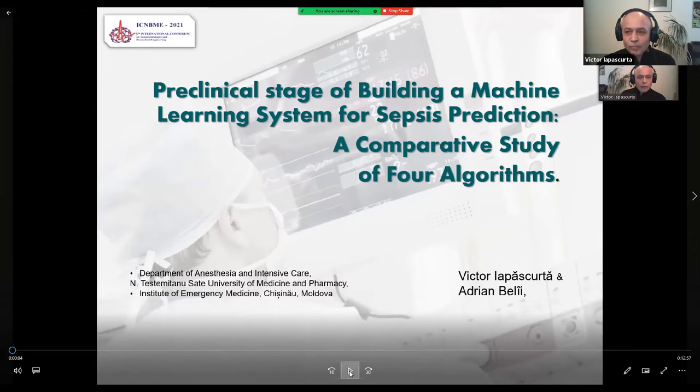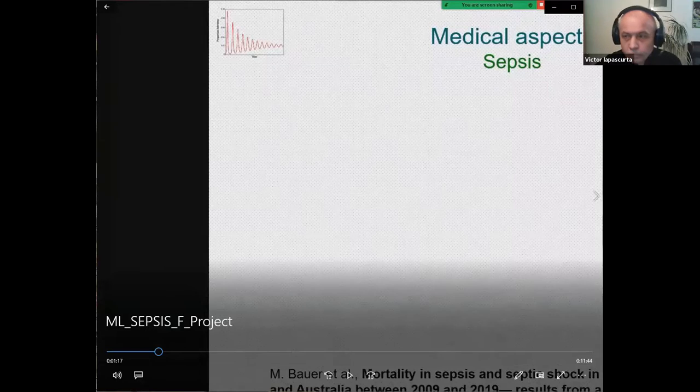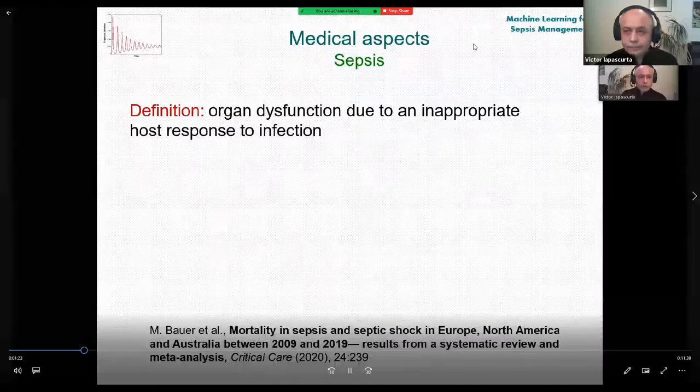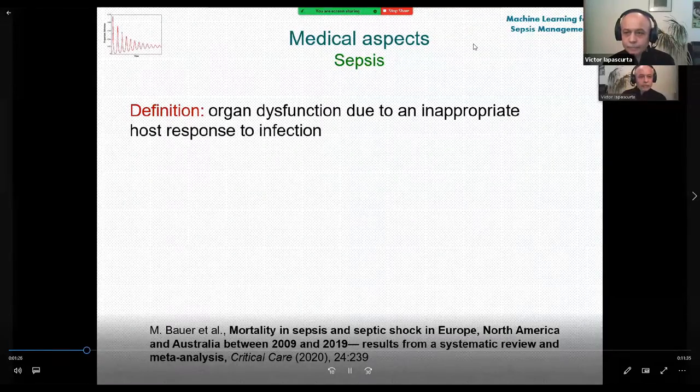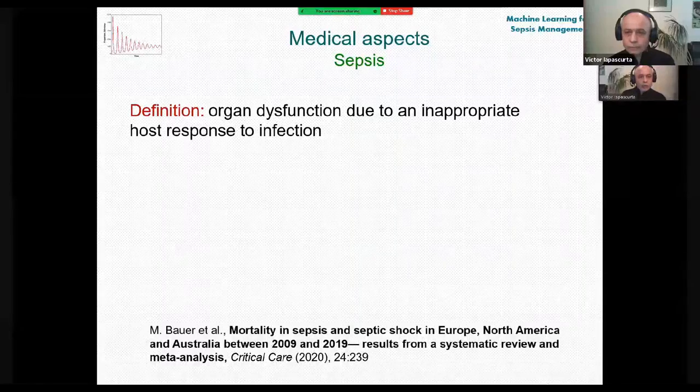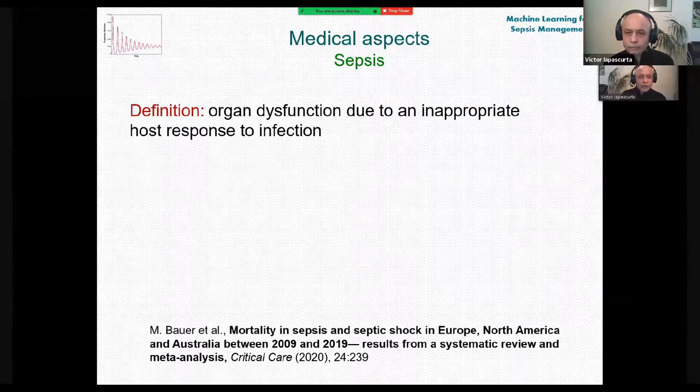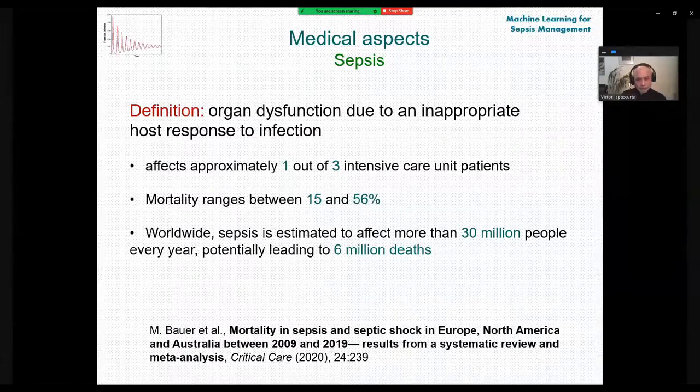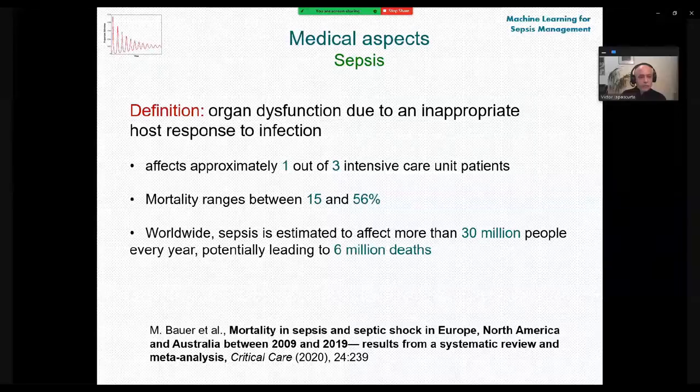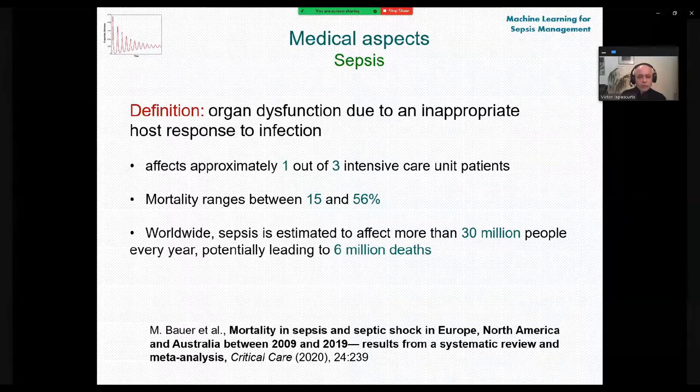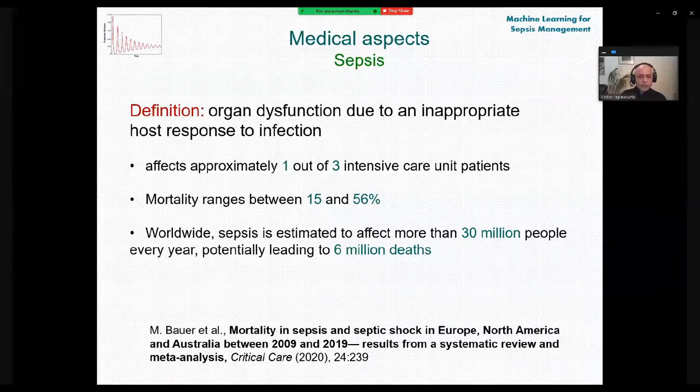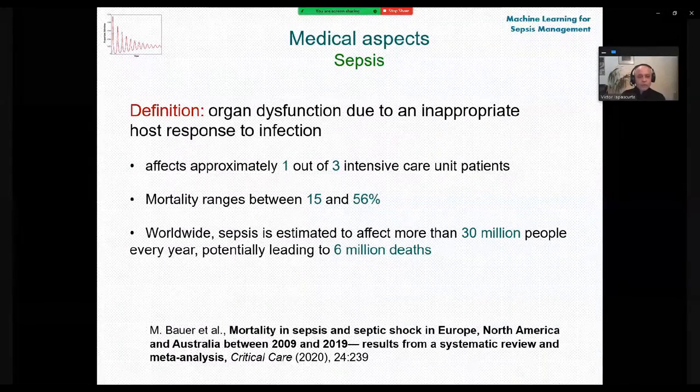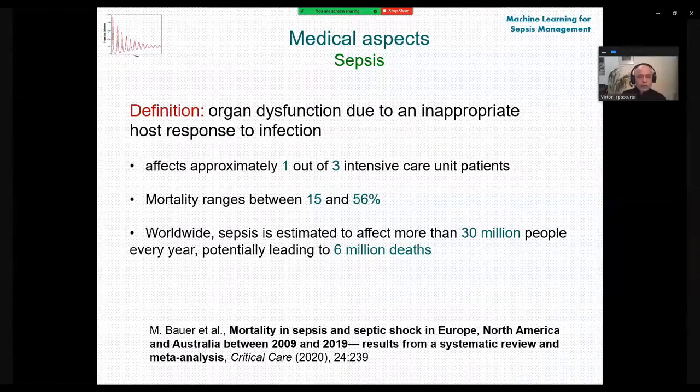Meanwhile, I will prepare for eventual questions. Using the latest definition, we can state, making it simple, that this is the situation when the body starts losing the fight with the microbe. And some statistics stating that one out of three intensive care patients will present with sepsis. Mortality is quite high and ranges between 15 and 56 percent. And worldwide sepsis is affecting more than 30 million people with 6 million deaths.